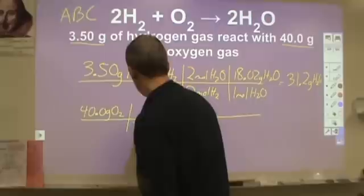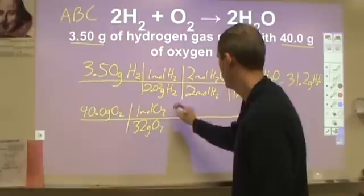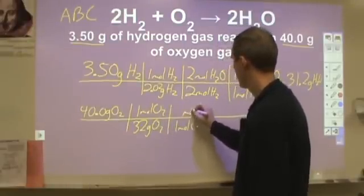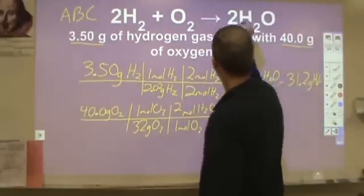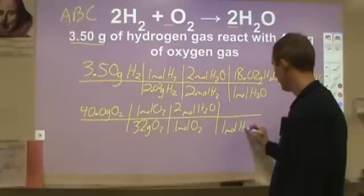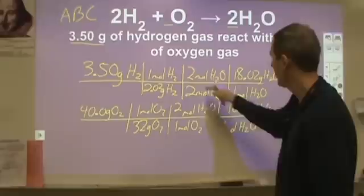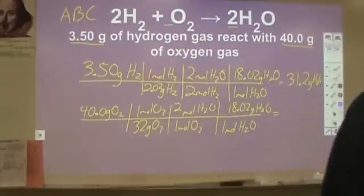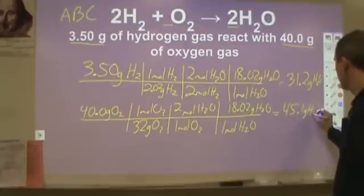For the oxygen, I'll do the same thing. 32 grams of O₂ gives me one mole of O₂, so I convert into moles of O₂, then convert from moles of oxygen to moles of steam using my balanced reaction — two moles of steam for every one mole of O₂ — and then change that into grams. One nice thing is that the molar mass conversion step is the same, so you can copy off yourself. That comes out to be 45.1 grams of steam.